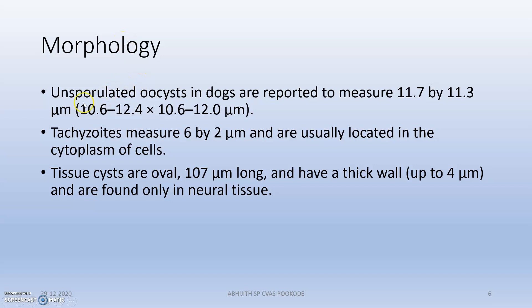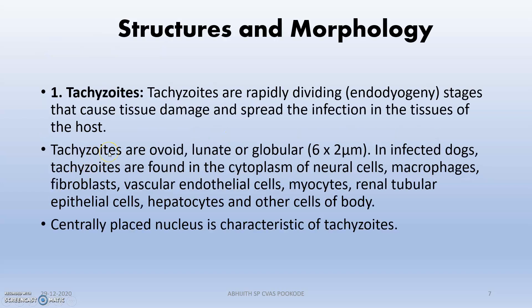Regarding morphology, unsporulated oocysts in dogs are reported to measure a specific size. Tachyzoites measure 6 by 2 micrometers. Tachyzoites are the rapidly dividing stage — 'tachy' means rapidly dividing — and this stage causes tissue damage and spreads the infection in the tissues of the host.